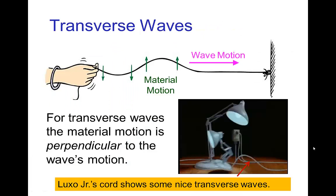There are two basic types of waves. The first type is a transverse wave. In a transverse wave, the motion of material is perpendicular to the motion of the waves. Ocean waves, water waves are an example of transverse waves.